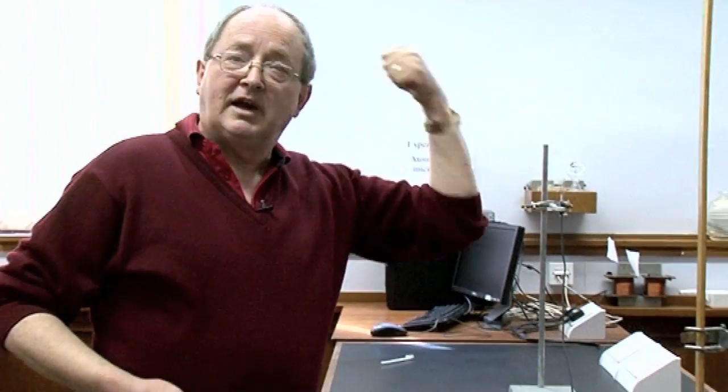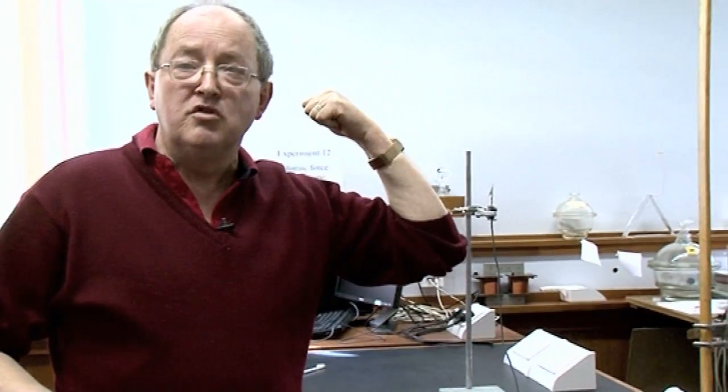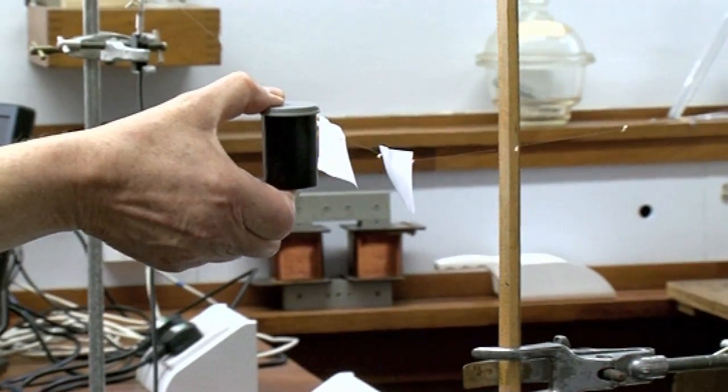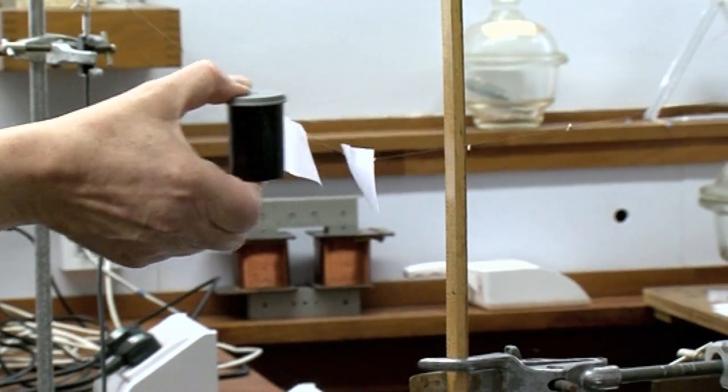And if I turn the magnetic field around, I change the direction of the force. So this is a force between a moving charge and a magnetic field, which acts in a funny, funny way, which you normally can't see. But here it's very graphic because I've got such a long, strong magnetic field, you can actually see it being repelled.